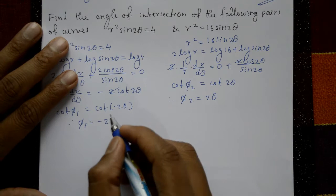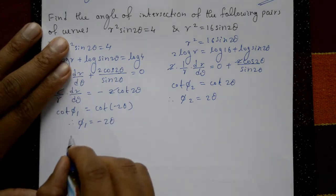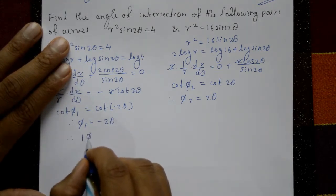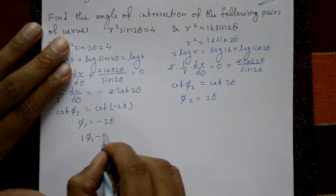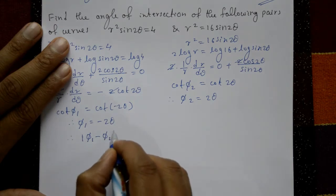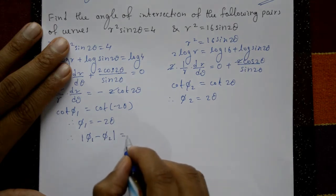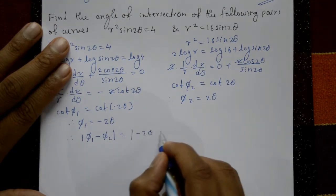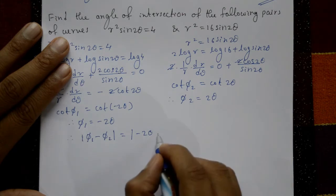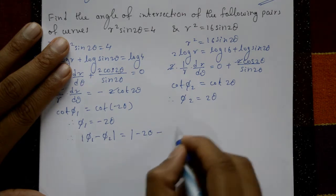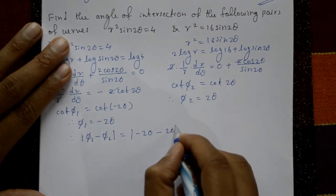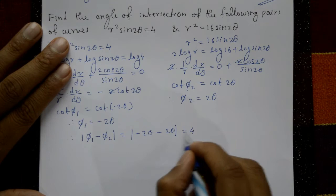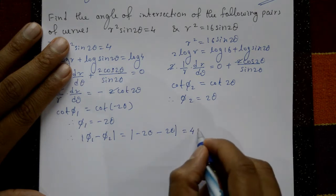Now find the angle of intersection. |φ₁ − φ₂| = |−2θ − 2θ| = |−4θ| = ±4θ. This is equation number 1.